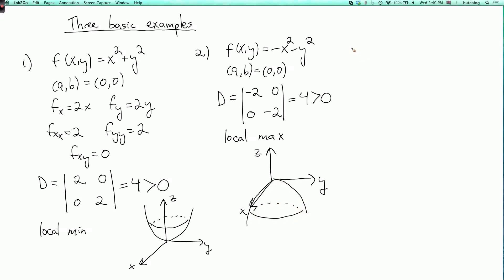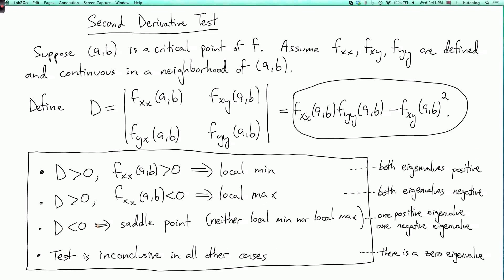Now the third example is f(x,y) equals y² minus x², and (a,b) equals (0,0). So here fx is minus 2x, fy is 2y, so fxx equals minus 2, fyy equals plus 2, fxy equals 0. So D is the determinant of the matrix minus 2, 0, 0, 2, which is minus 4, which is negative. So this is the third case of the test, where D is negative, and that tells us that it's a saddle point.